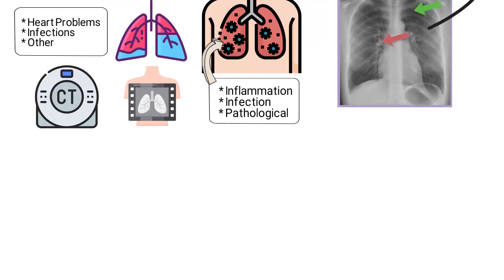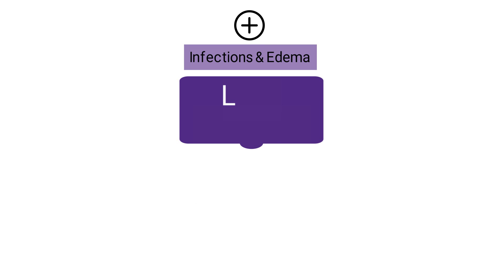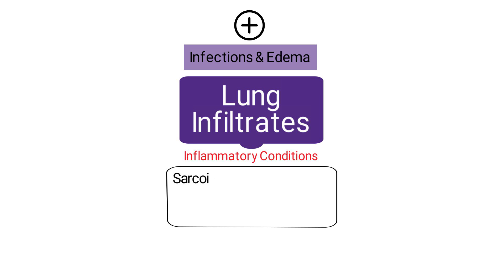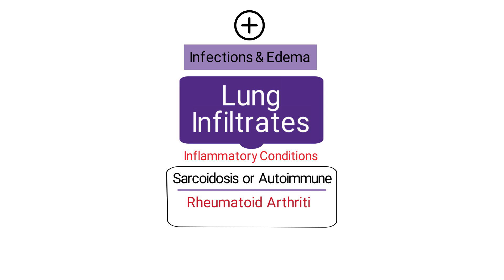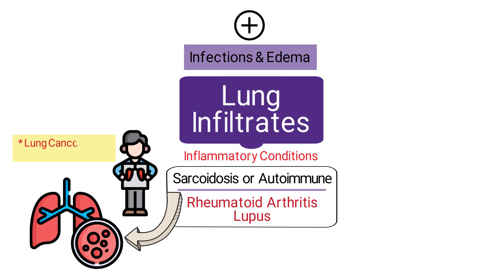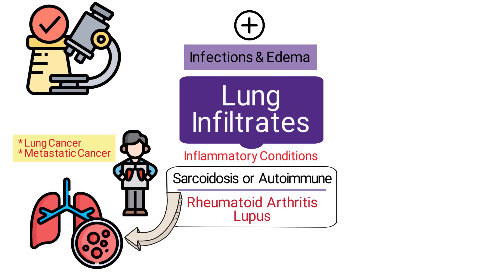In addition to infections and edema, lung infiltrates can also be caused by inflammatory conditions such as sarcoidosis or autoimmune diseases like rheumatoid arthritis and lupus. These diseases can lead to the accumulation of inflammatory cells in the lung tissue, manifesting as infiltrates on imaging. Lung cancer and metastatic cancer from other sites can also present as infiltrates, often requiring further investigation to differentiate them from benign causes.